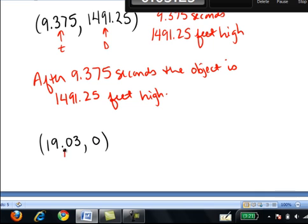Again, I sort out input and output. The inputs are t's. The outputs are d's. So this is 19.03 seconds, and this is 0 feet high. This is telling us that at 19.03 seconds, the object is 0 feet high. The object has hit the ground.